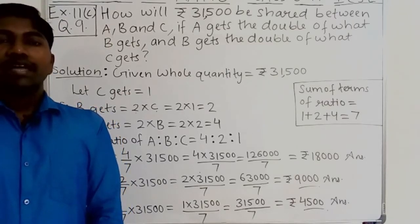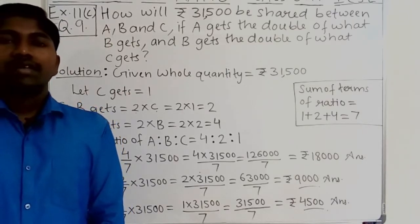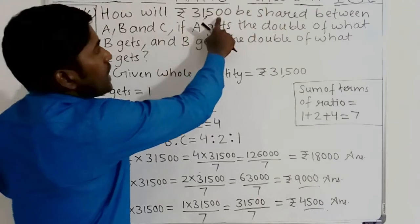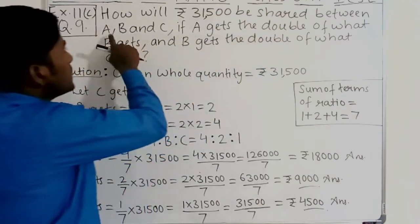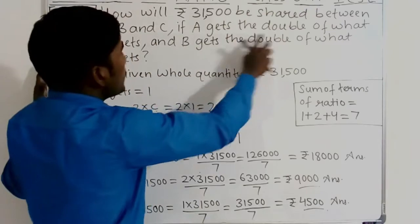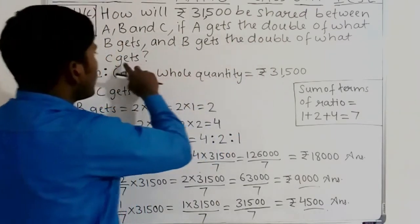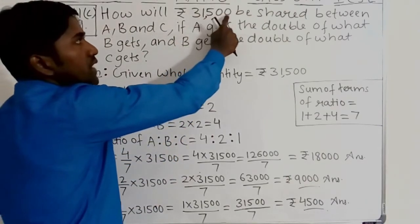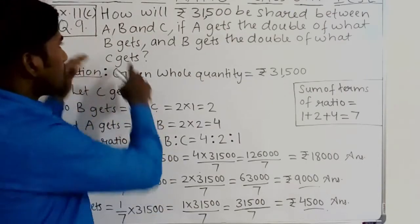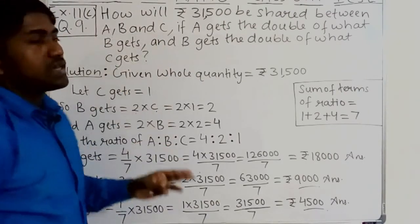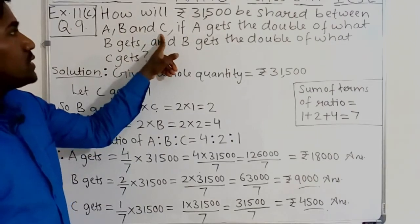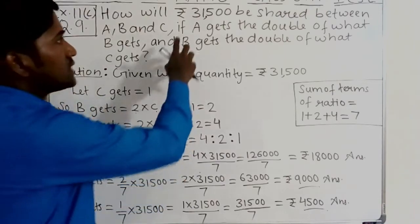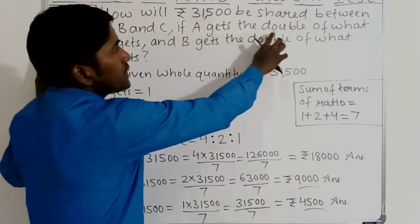Hello friends, welcome back to the channel. Now we are going to solve question number 9, exercise 11C. The question is: how will rupees 31,500 be shared between A, B, and C? Here the amount of 31,500 is to be divided among three persons A, B, and C. They have a condition: A gets the double of what B gets.